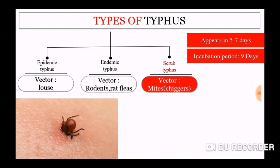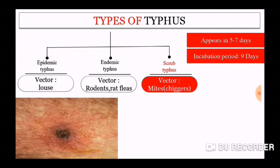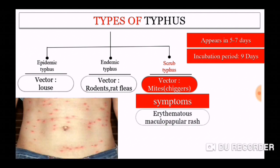Next, scrub typhus. Scrub typhus is mainly spread through the vector mites, also known as chiggers. The symptoms appear in about 5 to 7 days, and its incubation period is around 9 days. After the bite, it leaves an eschar resembling a cigarette burn scar on the body.